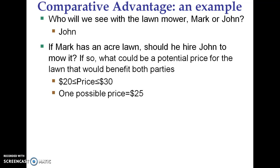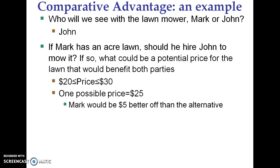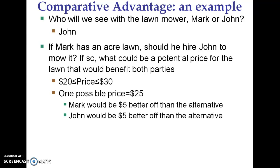Let's say one possible price is $25. We said trade can make everyone better off — at a price of $25, can Mark and John both be better off? Mark would be $5 better off than his alternative, because the alternative would be to mow the lawn himself, costing him the $30 he could have made as a bookkeeper. If he hires John for $25, he's saving $5 versus doing it himself. John would also be $5 better off — his alternative would be working at the pizzeria for two hours, where he could have only made $20. So if he makes $25, he's $5 better off than his alternative. You can see trade can cause both parties to gain.